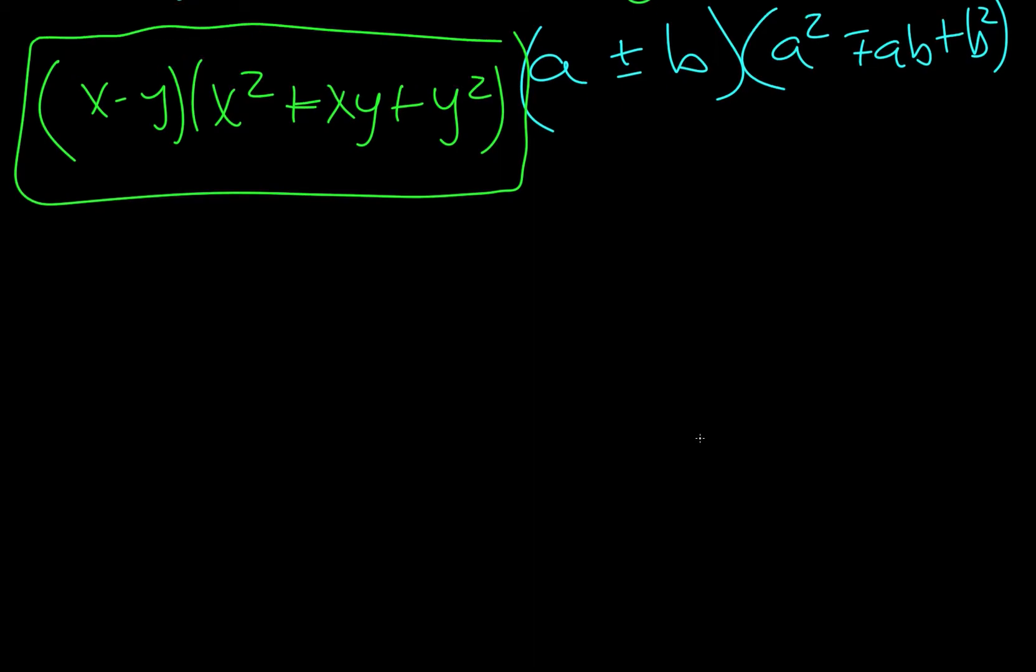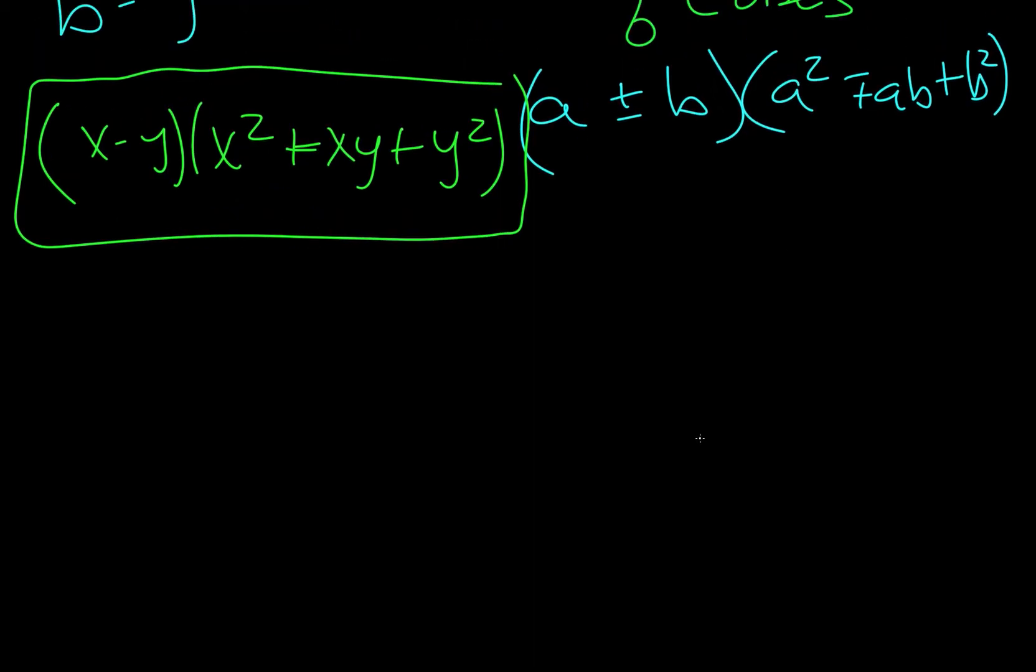And then we'll try one more. I'll keep this formula so you can see it. So let's do 64x to the 6 minus 125y cubed. So the first thing we want to do is determine our a and our b. So let's do that. So what times what times what would make 64? Well, that's going to be 4.